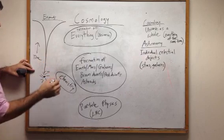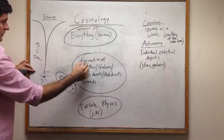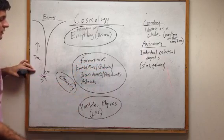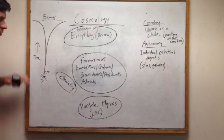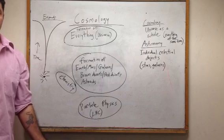So what they do is to completely circumvent chemistry of formation of Earth, Mars, galaxies, brown dwarfs, red dwarfs, asteroids, and go straight to an experiment to where they can somehow prove that all of this came to be via the Big Bang.